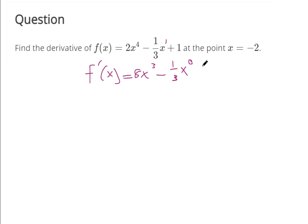But then the power gets reduced by 1. So that's just x to the 0, which is 1. And then the rate of change of a constant is 0. It's a constant. It's not changing. So this represents the derivative.